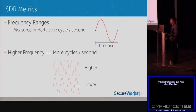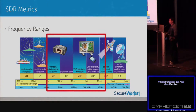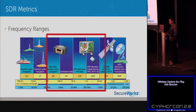Next is frequency ranges. A hertz is one cycle per second. The higher the frequency, the more cycles per second. What I've marked out in red on the spectrum chart is generally the range of a typical SDR you'd buy today — from the high kilohertz range up to the mid-gigahertz range, covering ham frequencies, GPS, Wi-Fi, and more.